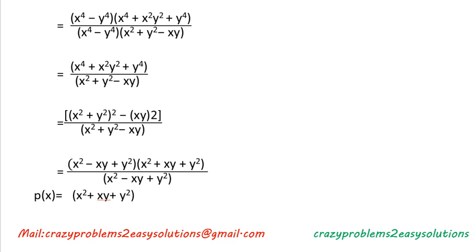So we have solved two types of problems: when two polynomials and the LCM are given, we find the GCD; and when the LCM, GCD, and one polynomial are given, we find the other polynomial. Keep watching Crazy Problems to Easy Solutions. Bye bye.